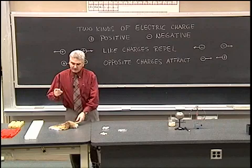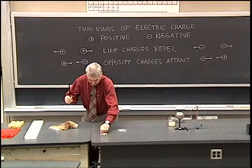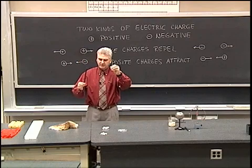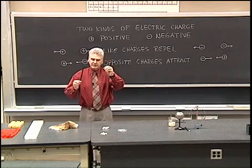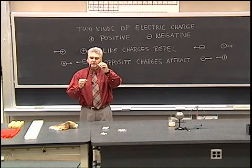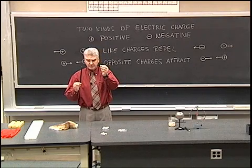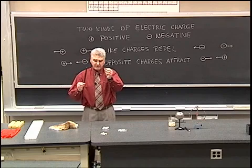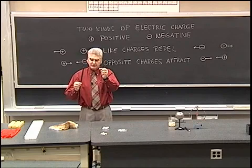So we have a negatively charged object and a little neutral object, a little piece of puffed rice. When the negative charge gets close to this neutral object, the neutral object is made up of positive and negative charges, as are all atoms.